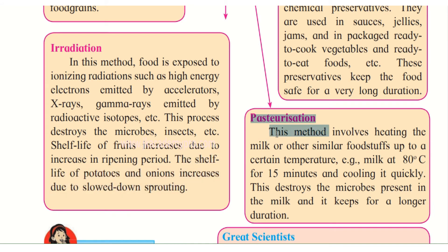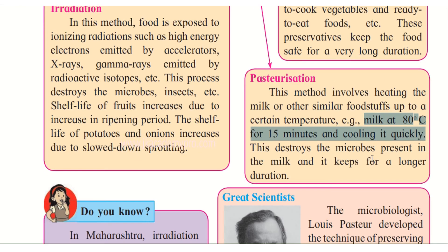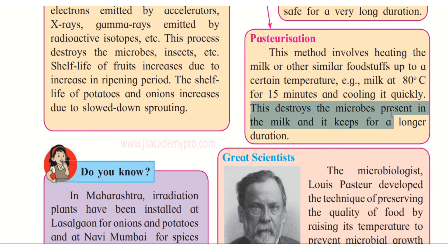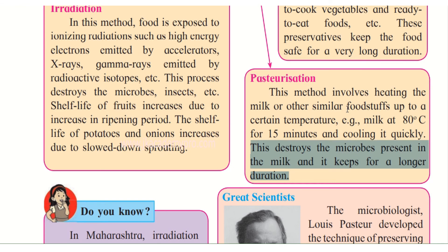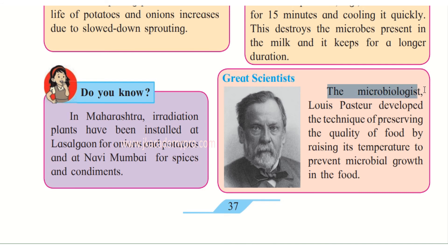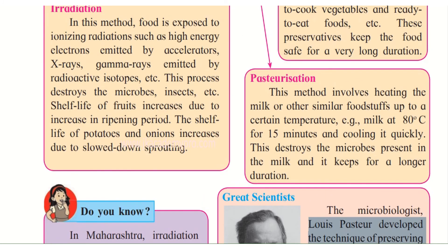Next is pasteurization. This method involves heating milk and other similar foodstuffs up to a certain temperature — for example, milk is heated to 80 degrees Celsius for 15 minutes and then cooled quickly. This destroys all the microorganisms present in the milk, preserving it for a longer duration. Louis Pasteur, the great microbiologist, developed the technique of preserving food quality by raising its temperature to prevent microbial growth, and so this whole procedure is named after him and called pasteurization.